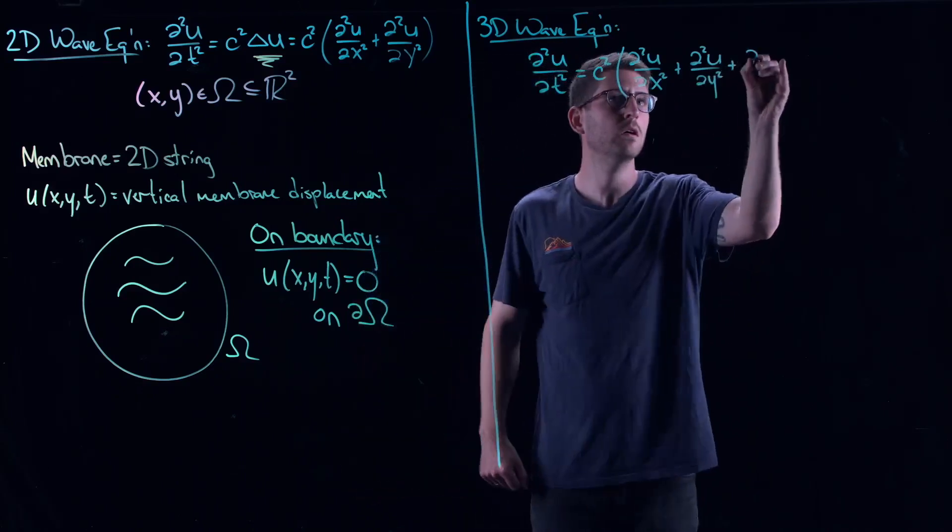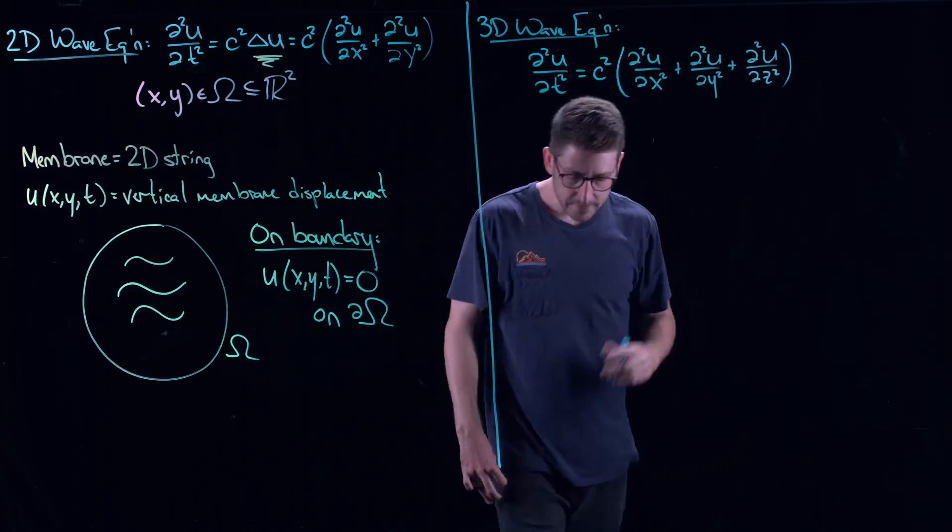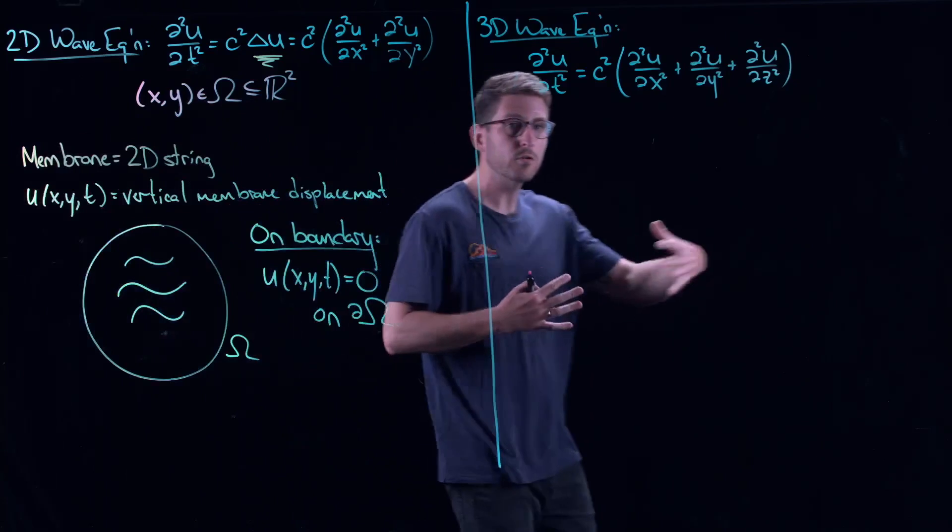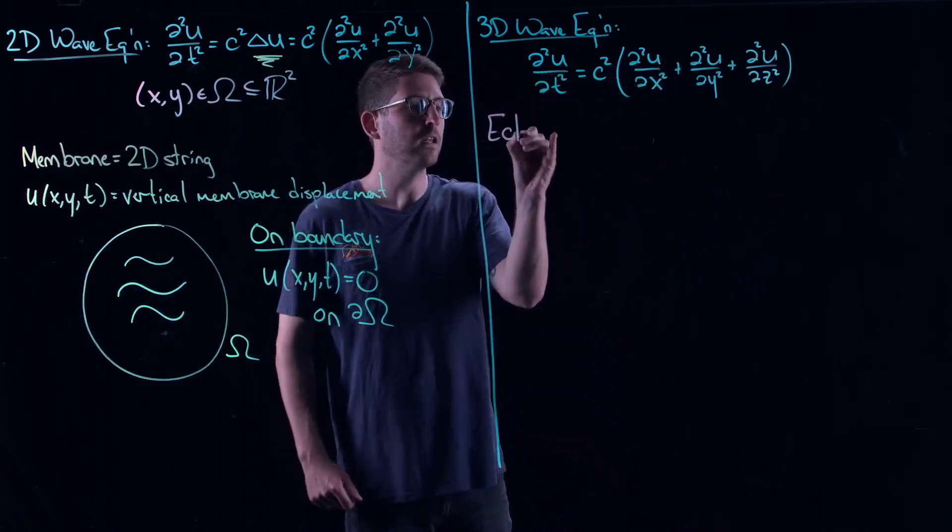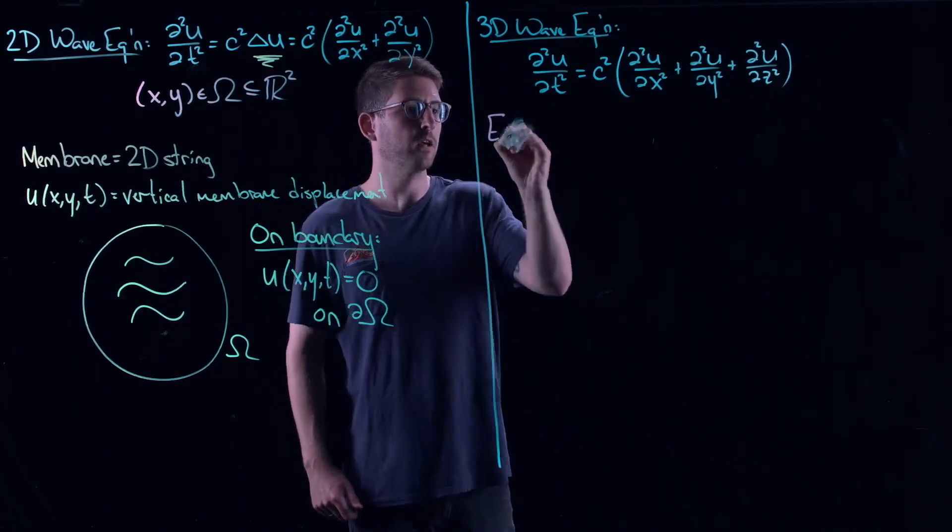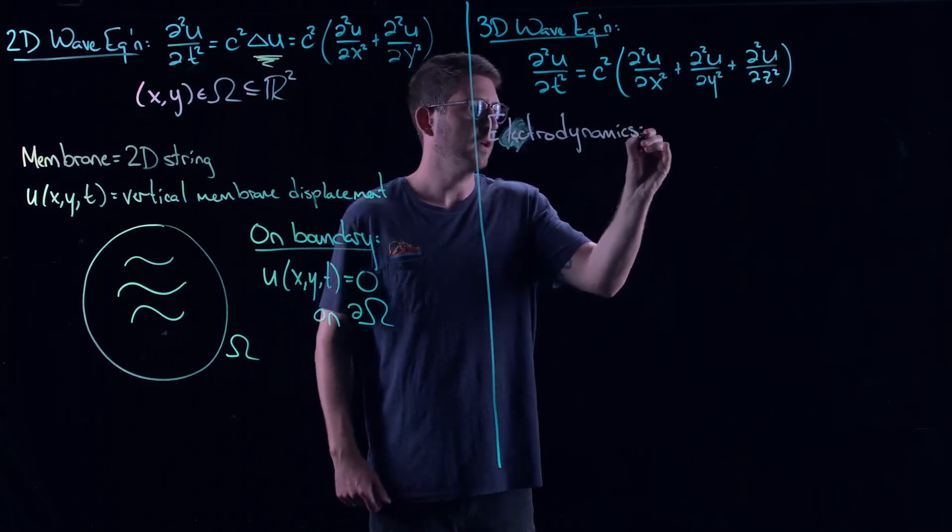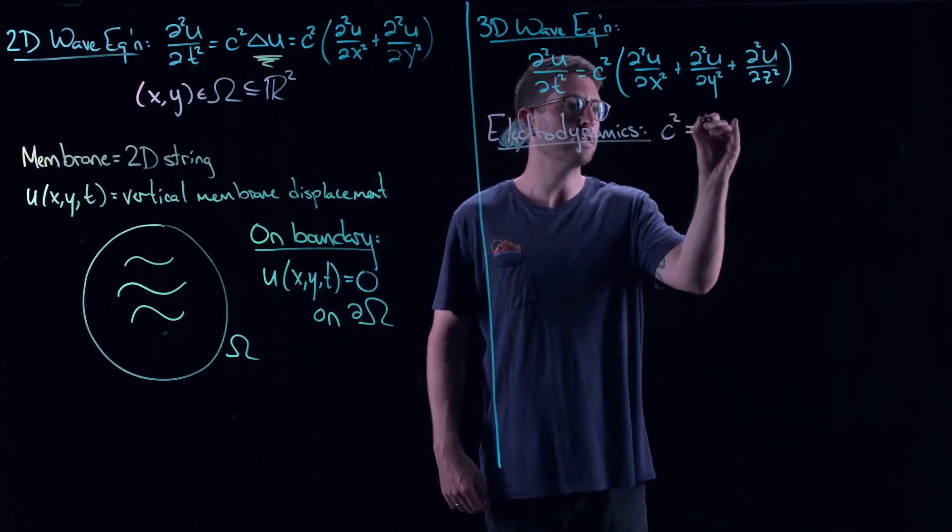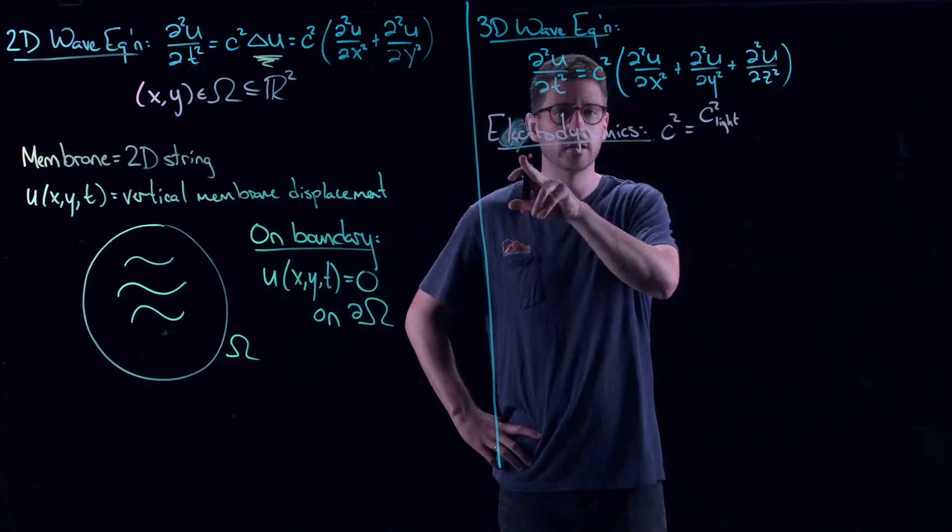So, the question is, what is the use of this equation? Well, this thing comes up in a whole bunch of different contexts to describe waves moving through a 3D spatial medium. So, for example, one example of this is electrodynamics. And in this case, we have that this term out front, c squared, this is the square of the speed of light. So, because of the electrical part here.